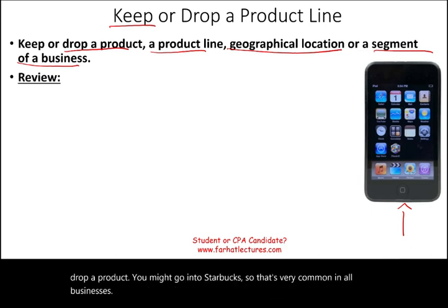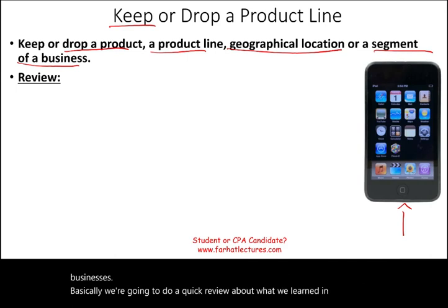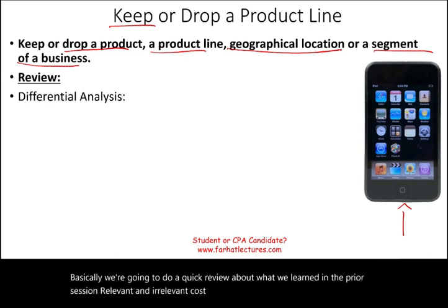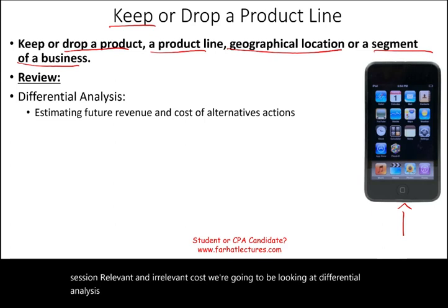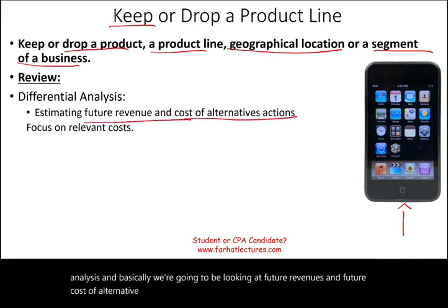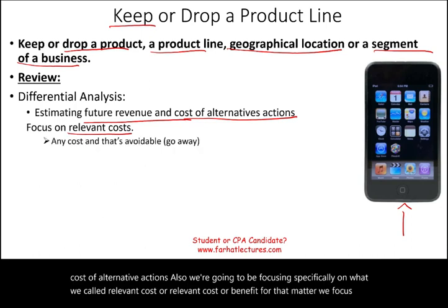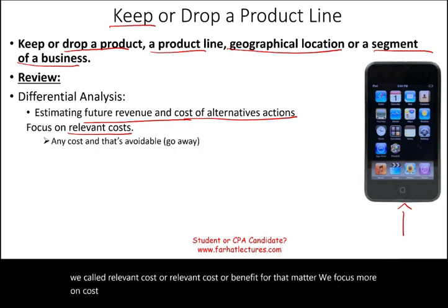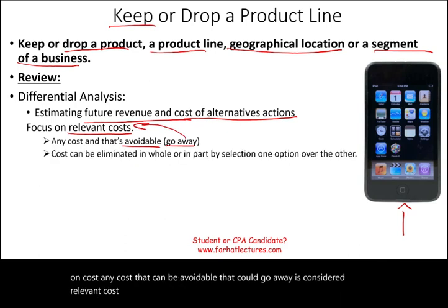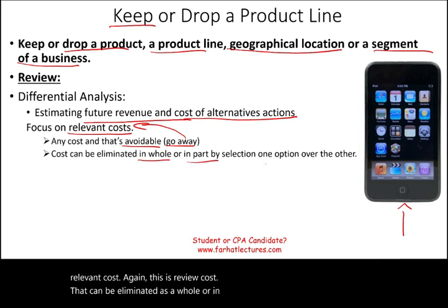We're going to do a quick review of what we learned in the prior session: relevant and irrelevant cost. We're going to look at differential analysis — future revenues and future costs of alternative actions. We'll focus specifically on relevant cost or relevant benefit. Any cost that is avoidable — that could go away — is considered a relevant cost. Cost that can be eliminated as a whole or in part by selecting one option over another is what a relevant cost is.